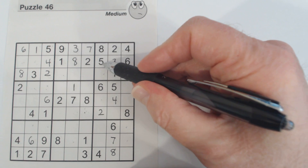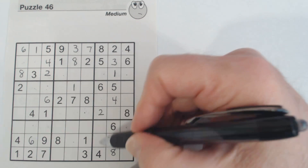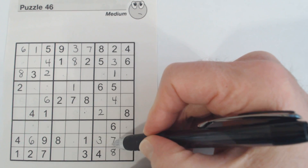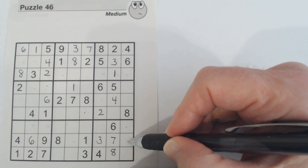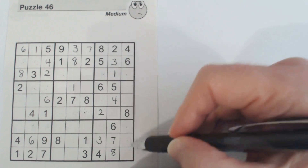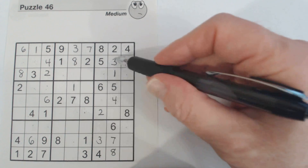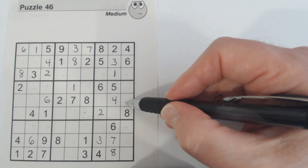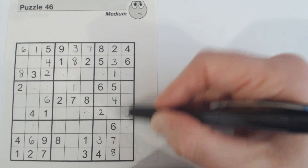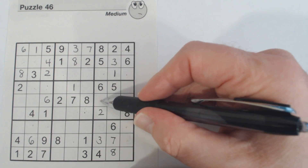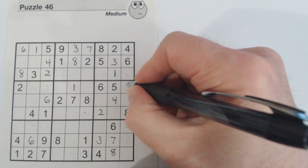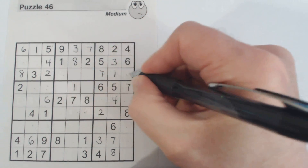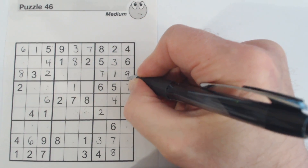So we have 2, 3, and 5 left in that row. There's a 2 and a 5 there, so that's a 3. That gives us 2 and 5 for the remaining cells. Looking at the 3s and 7s: there's a 7, so that's a 7; therefore that's a 7 and that's a 9.